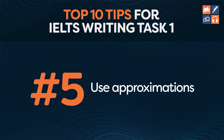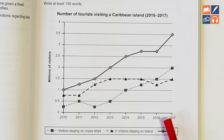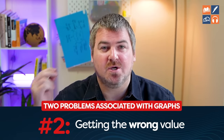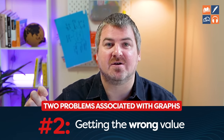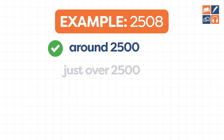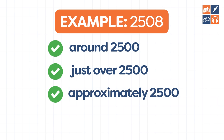Tip number five is to use approximations when describing data in the details paragraphs. Often with charts like line graphs, it's very difficult to see exactly what the data is. This leads to two problems: you spend too much time thinking about it, and students often write an exact figure that turns out to be wrong. Instead, write 'around 2,500' or 'just over 2,500' or 'approximately 2,500' — all of these will be correct. Do things that make your job easier and lead to higher scores.